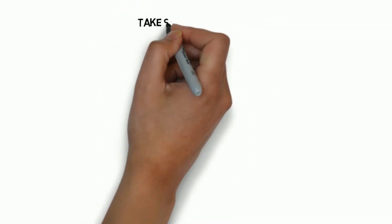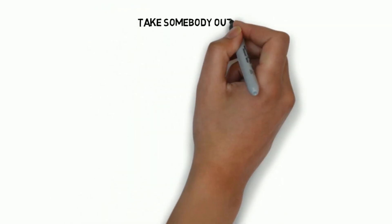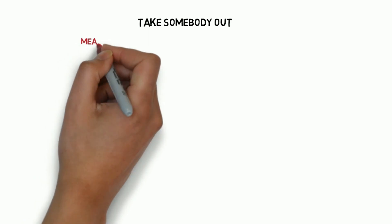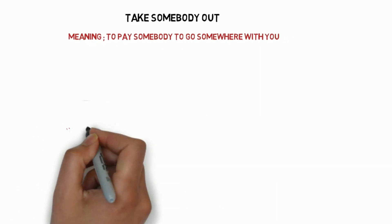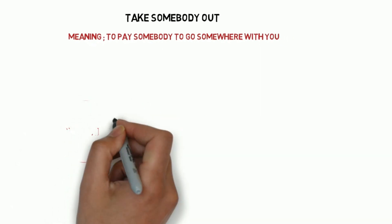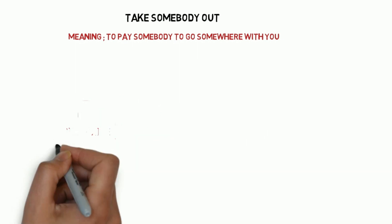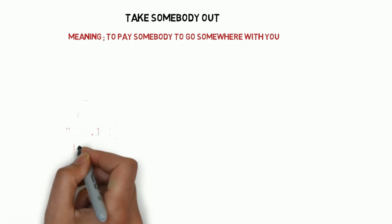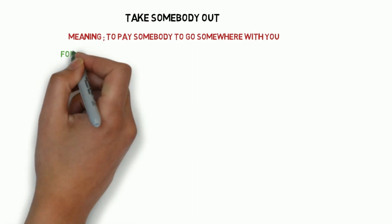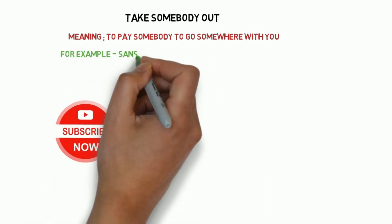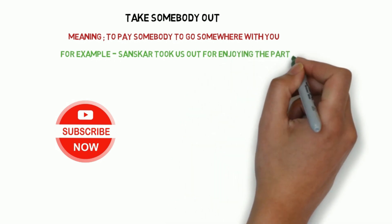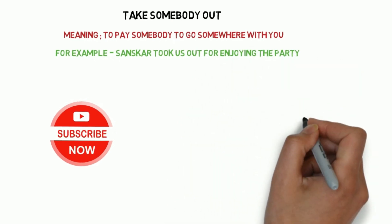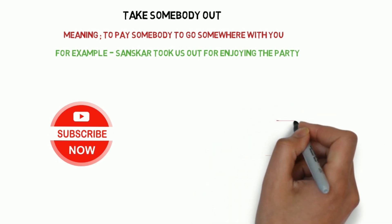Next is 'take somebody out,' which means to pay for somebody to go somewhere with you — aap kisi ko jab bahar le jate ho, to uska kharcha khud uthate ho, aap pay karte ho uske liye. For example: Sanskar took us out for enjoying the party — Sanskar hume bahar le ke gaya party ko enjoy karne ke liye.